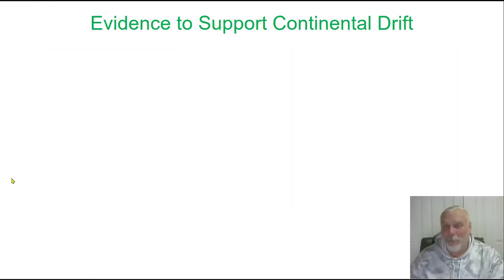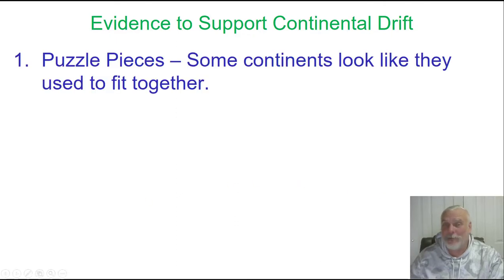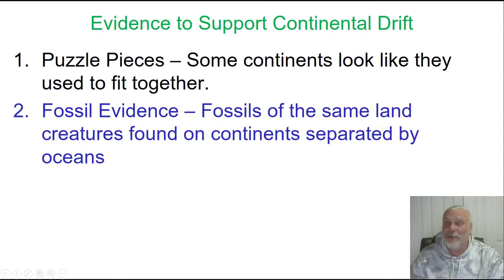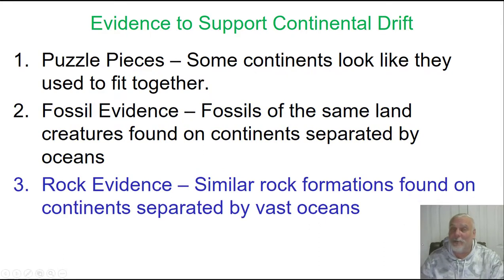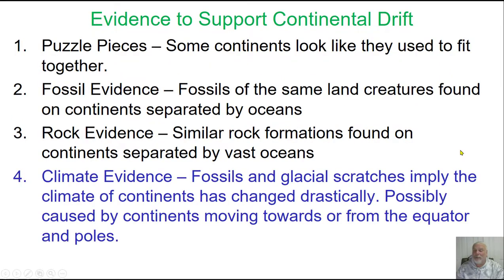Let's review the evidence supporting continental drift. First, puzzle pieces — some continents look like they used to fit together, in particular South America and Africa. Number two, fossil evidence — fossils of the same land creatures found on continents separated by oceans. Rock evidence — similar rock formations found on continents separated by vast oceans. And finally, climate evidence — fossils and glacial scratches imply the climate of continents has changed drastically, possibly caused by continents moving towards or away from the equator or poles.